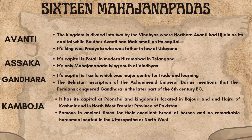The Kingdom of Gandhara had its capital at Taxila, which was a major centre for trade and learning. The Behistun inscription of the Achaemenid Emperor Darius mentions that the Persians conquered Gandhara in the later part of the 6th century BC. The Kingdom of Kamboja had its capital at Pushkaravati and was located in Rajauri and Hazara of Kashmir and in the North West Frontier province of Pakistan.